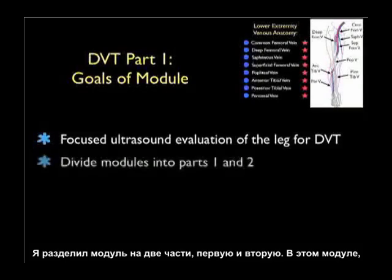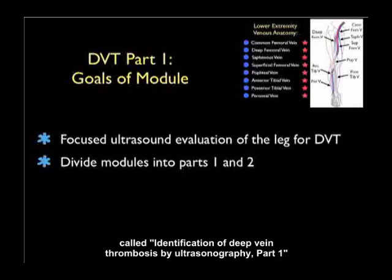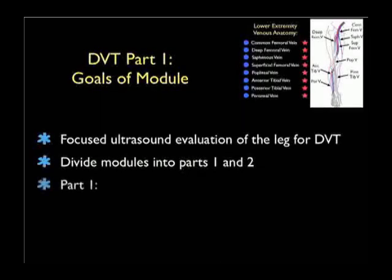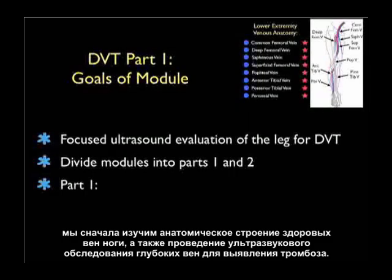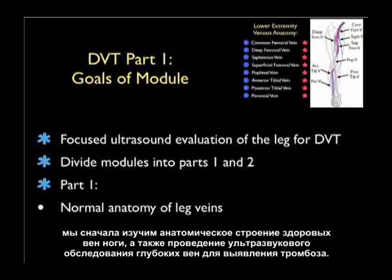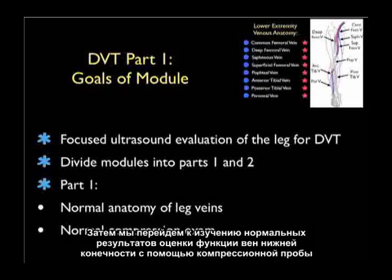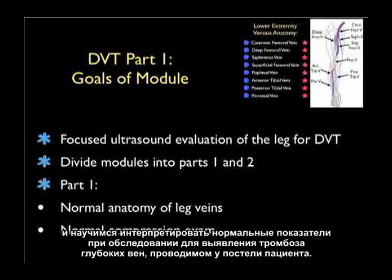I've divided this module up into parts 1 and 2. In this module, entitled DVT Ultrasound Part 1, we'll first learn the normal anatomy of the leg veins integral to performance of the DVT ultrasound examination. We'll then move on to learn the normal compression exam of the leg veins and how to interpret normal findings on the bedside DVT examination.